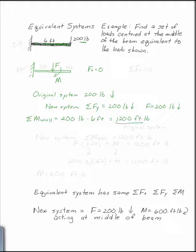This is in the original system. Now I want to make sure that my moment at the wall has not changed. So my new system has to also have the sum of the moments at the wall equal to the same number, 1,200 foot-pounds.